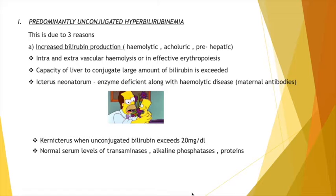Now we will discuss the laboratory findings of predominantly unconjugated hyperbilirubinemia. The first finding is unconjugated hyperbilirubinemia. Next, there will be normal serum levels of transaminases, alkaline phosphatase, and proteins — these three will be at normal serum levels. Transaminases and alkaline phosphatase are enzymes present in the liver.